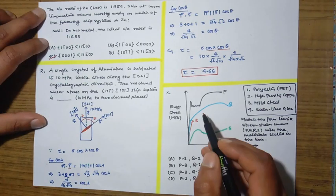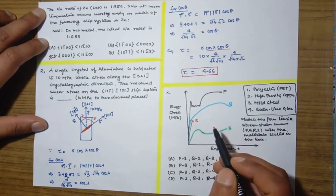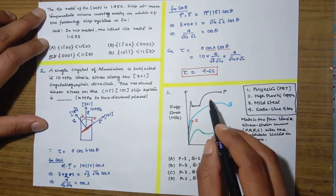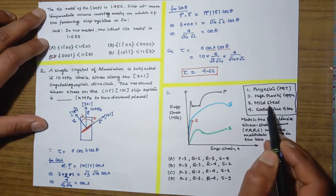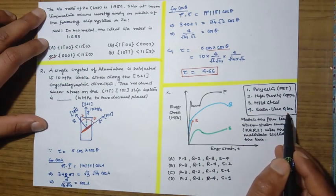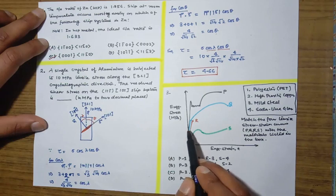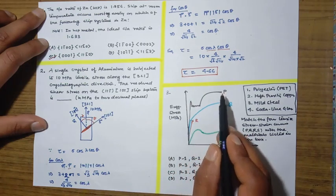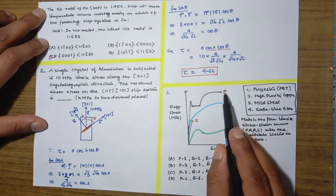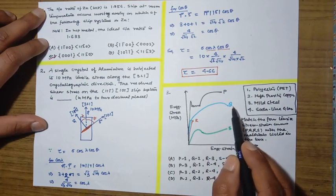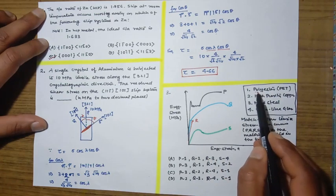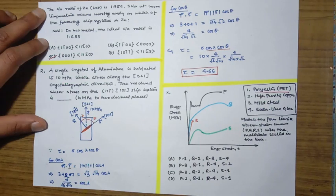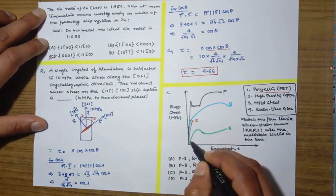The next question provides tensile stress-strain curves for different materials: (1) polyester, (2) high-purity copper, (3) mild steel, and (4) soda-lime glass, and we must match each to curves P, Q, R, and S. Polyester is a polymer material, and its stress-strain curve corresponds to the curve shown as S.